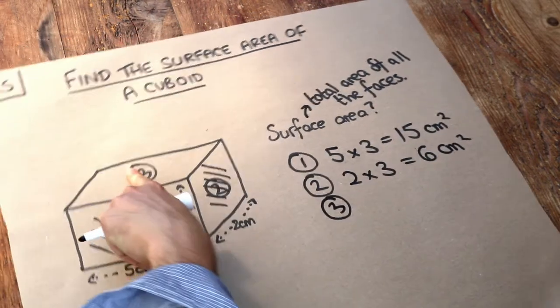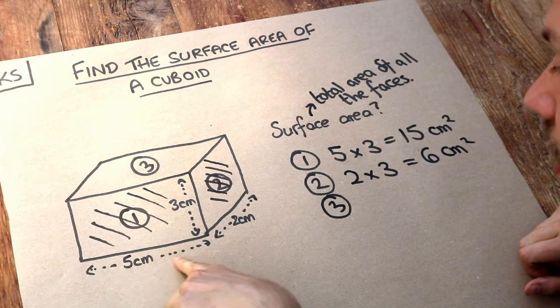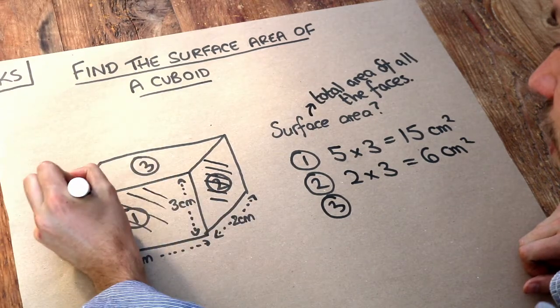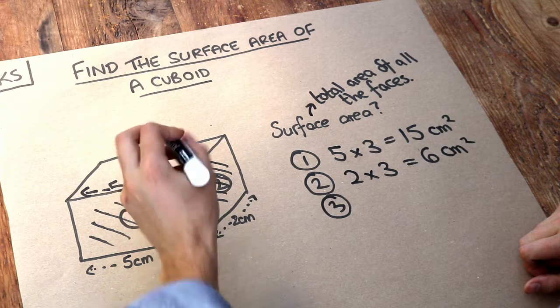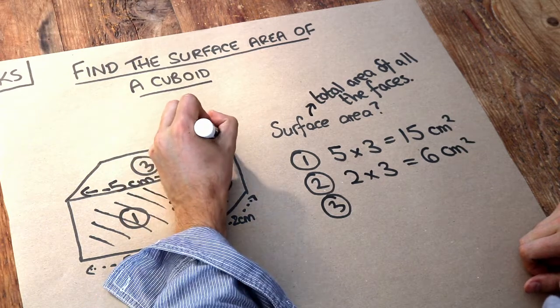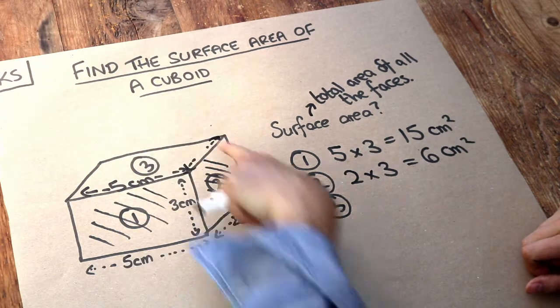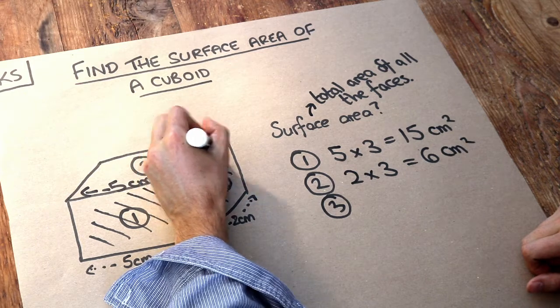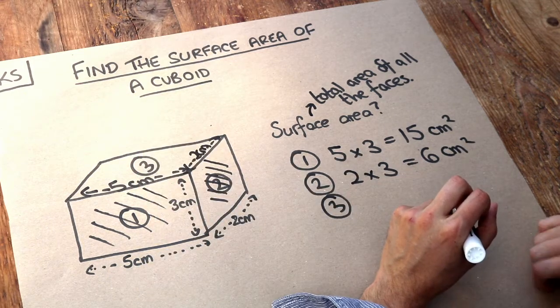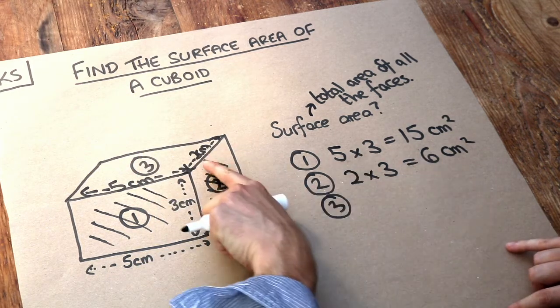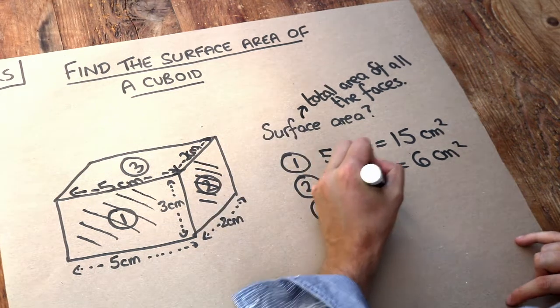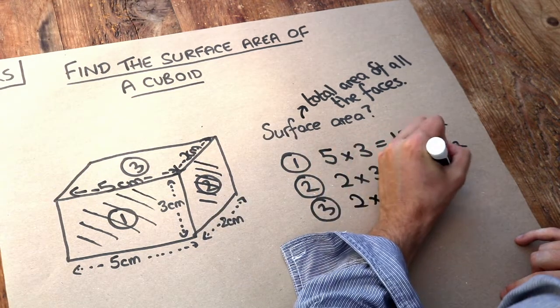And then what about the face at the top? Well we can see that this length here is 5 centimetres, and then this width here of the rectangle is going to be 2 centimetres. So we've got a 2 by 5 centimetre rectangle. And 2 times 5, the area will be 10 centimetres squared.